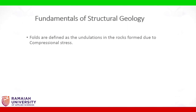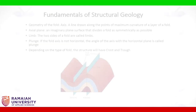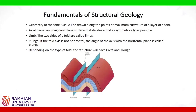Folds are defined as the undulations in the rocks formed due to compressional stress. Geometry of the fold: Axis is a line drawn along the points of maximum curvature of a layer of a fold. Axial plane is an imaginary plane surface that divides a fold as symmetrically as possible. Limb: the two sides of a fold are called limbs. Plunge: if the fold axis is not horizontal, the angle of the axis with the horizontal plane is called plunge.